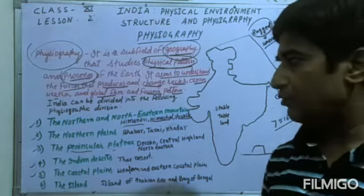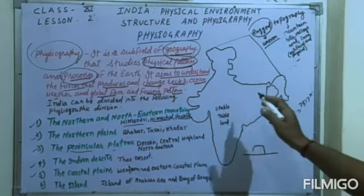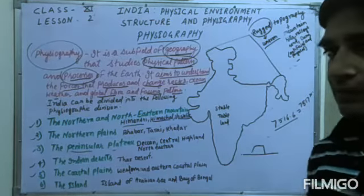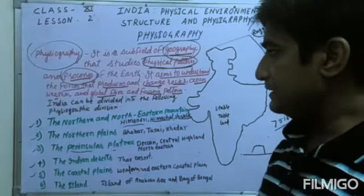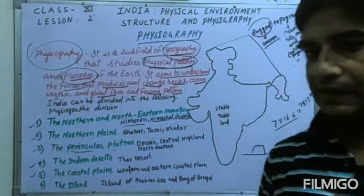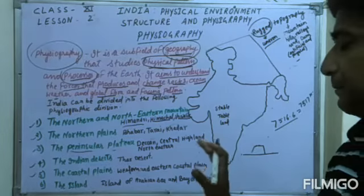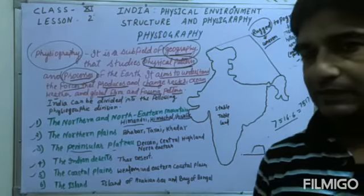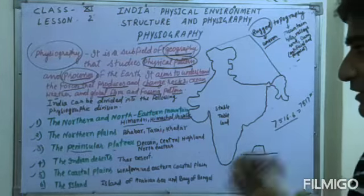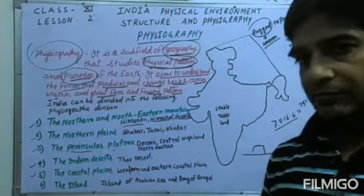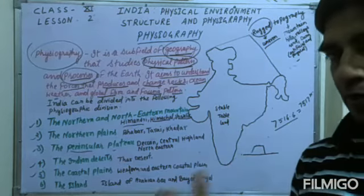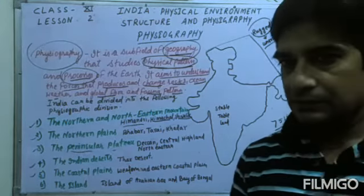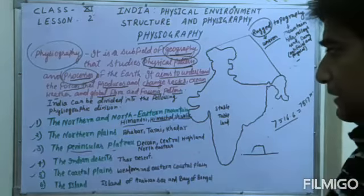Let's look at the physiographic divisions one by one. There are six physiographic divisions of India, going from north to south and east to west. Each physiographic division plays a very wide role in Indian climate, weather, soils, crops, vegetation, forests, population, rivers, and industries.